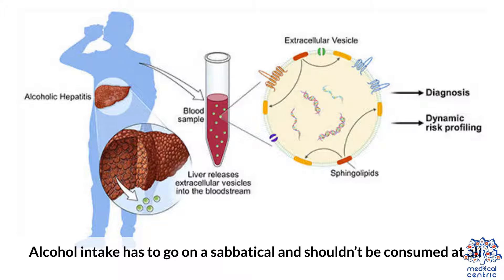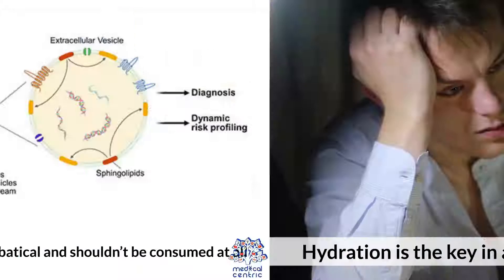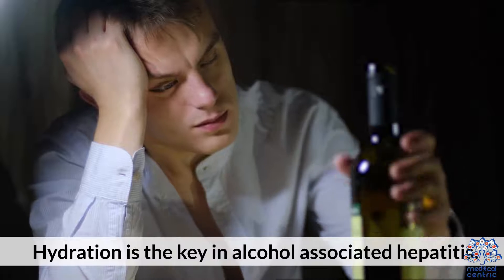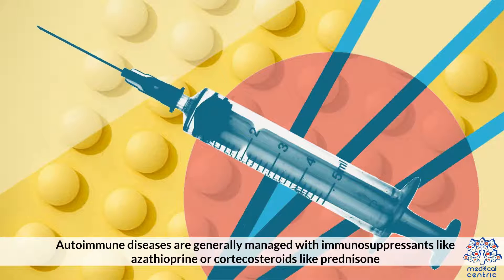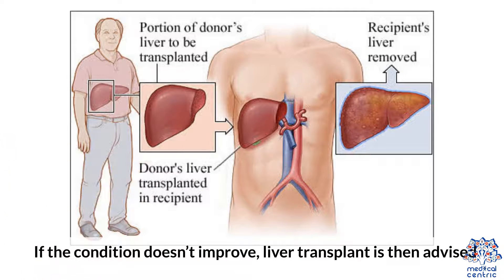Alcohol intake should be stopped completely. Hydration is the key in alcohol-associated hepatitis. Autoimmune diseases are generally managed with immunosuppressants like azathioprine or corticosteroids like prednisone. If the condition doesn't improve, a liver transplant is then advised.